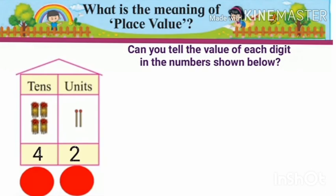Now here, you have to tell the value of each digit in the number shown below. 4 is in the tens place, so its place value is 40. And 2 is in the units place, so its place value is 2 itself. Understood, children?